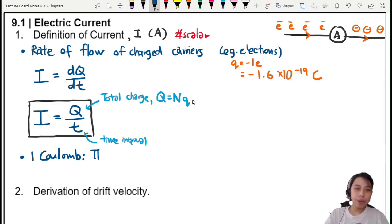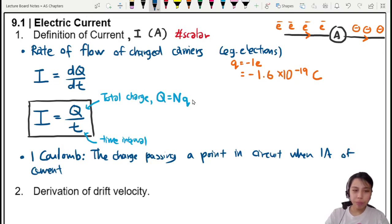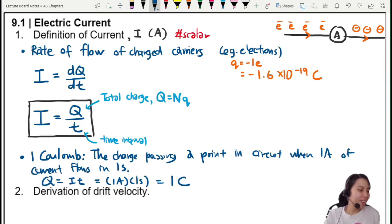You know, to make it simple, we just say that, oh, you want to define coulomb? This will be the charge passing a point in the circuit when one ampere of current flows in one second. This might seem quite a handful. Like, why do you use this? Well, because of Q equals to It. So, if we say one ampere, one second, we get one coulomb. And that's our definition. We just got to define it some way.